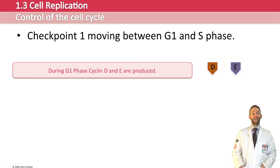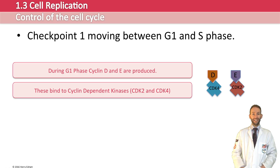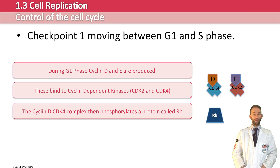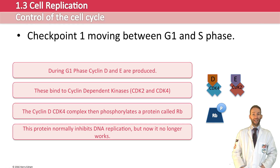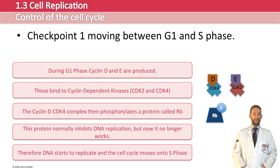These bind to cyclin-dependent kinases — in this case CDK2 and CDK4. Looking specifically at the cyclin D-CDK4 complex, this then phosphorylates a protein called RB, adding a phosphate group to it. This protein normally inhibits DNA replication — it stops DNA replication from happening. But now that it has a phosphate group attached, it stops working. And if it's not inhibiting DNA replication, then DNA replication can start to happen, and we move into the S phase.